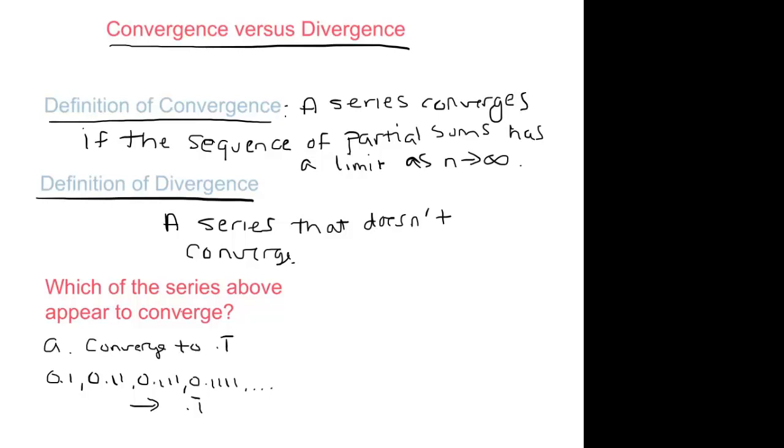It converges to point one repeating, which by the way is also known as one ninth. Right, so by the definition, once we did the partial sums and wrote them out as a list, if that list looks like it's approaching something, then we would say it converges. Compare that to b and c.